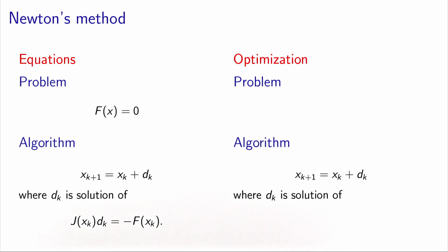And J of xk is called the Jacobian of f. This is actually the first derivative matrix of the system f.